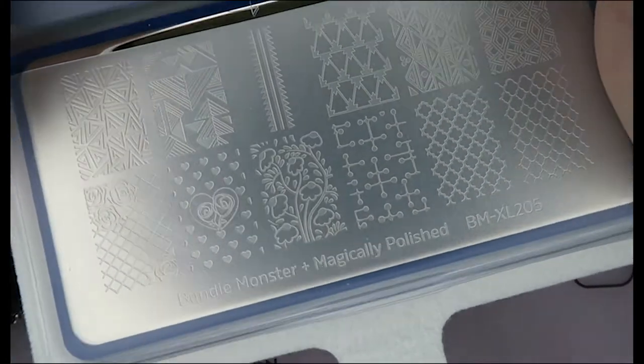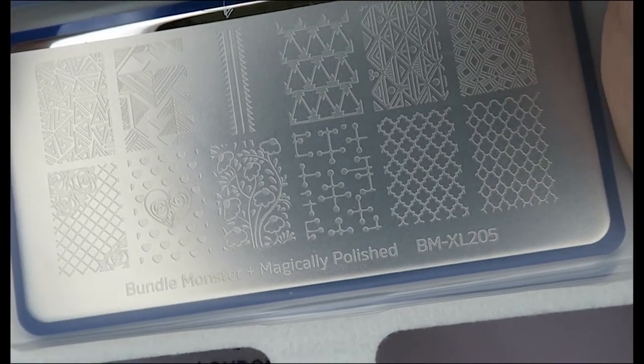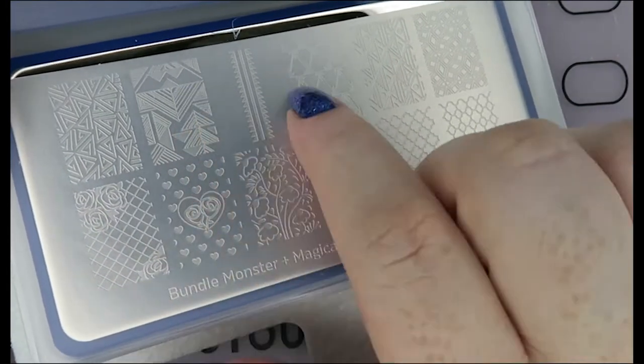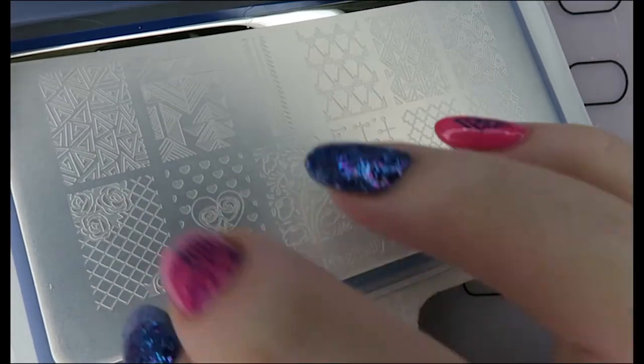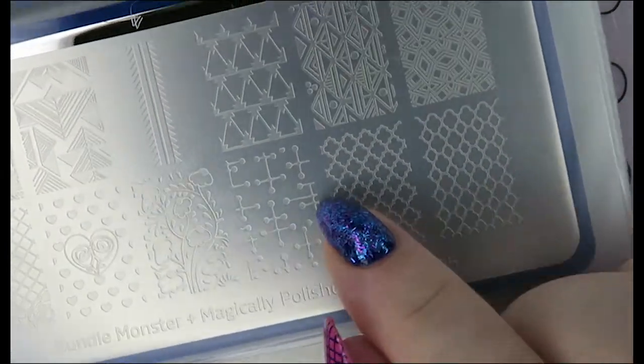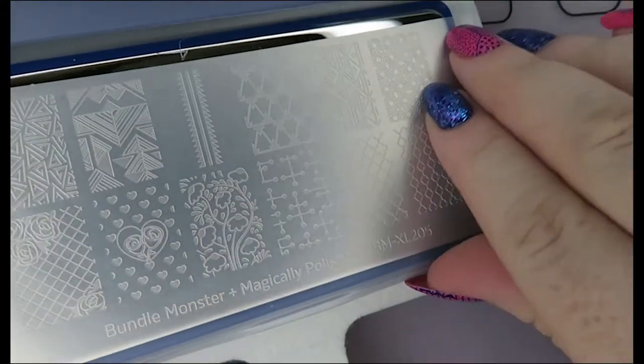Then we have Bundle Monster in collaboration with Magically Polished, and this is XL205. We have various geometric shapes. This one is kind of like that Creative Shop one but the reverse, so I could maybe use them together. Just got various designs here. I like this a lot, this is really, really pretty.